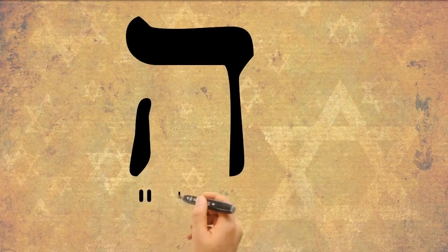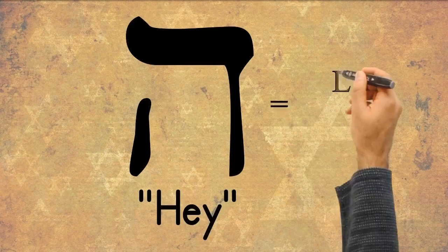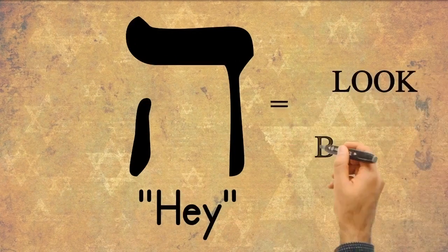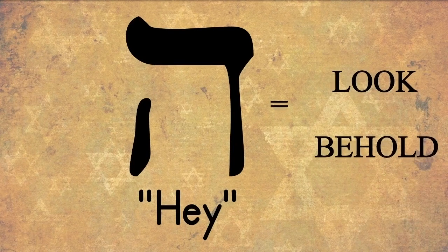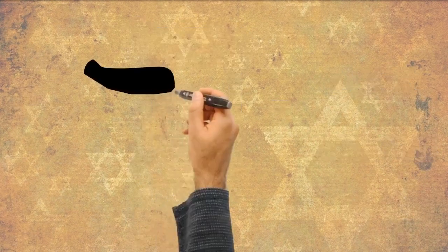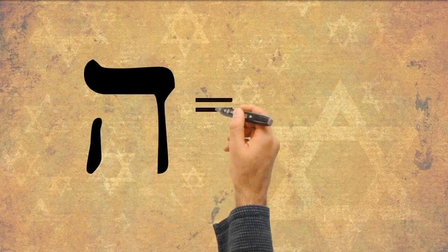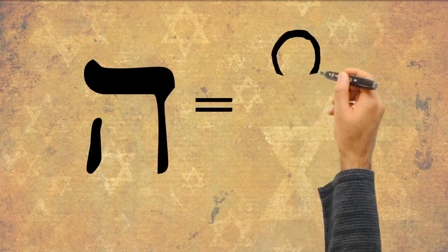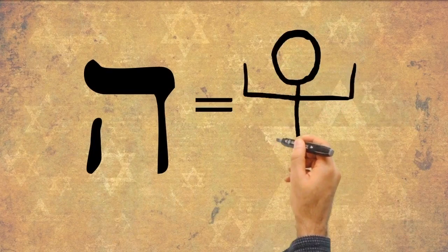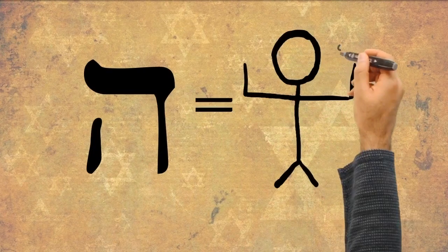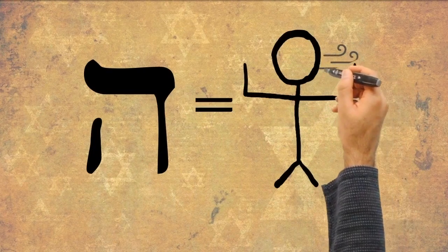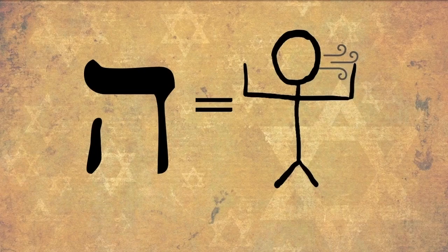The letter He means look or behold. In the ancient Paleo-Hebrew pictograph, He is seen as an image of a person standing with their hands raised. It can also mean breath, as one does when looking at an amazing sight.